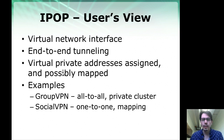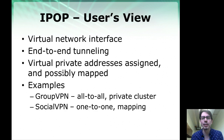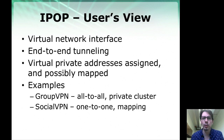One example of a user view of IPOP is GroupVPN, and this is akin to a private cluster. Every node would have an IP address on a subnet, and all the nodes would be able to communicate with all other nodes in the GroupVPN using a unique address that's not translated or mapped.